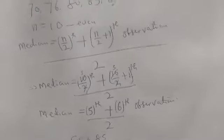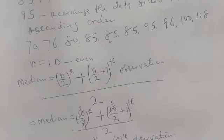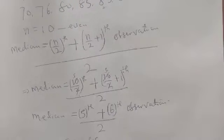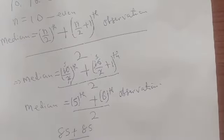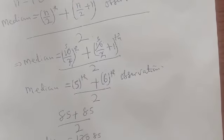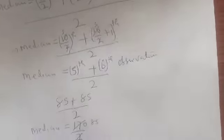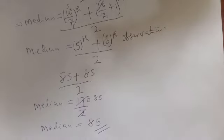So we rearranged the data in ascending order with n equal to 10. Using the formula n/2 and n/2 plus 1 observation all over 2, substituting 10 for n, we get the 5th observation which is 85 and the 6th observation which is also 85. Therefore our median is equal to 170 over 2, which is 85.